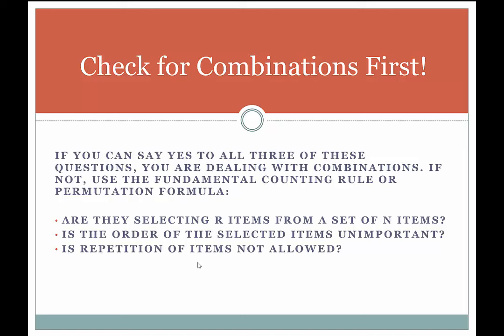Let's go over the three questions you need to ask yourself once you recognize something is a counting problem. The first question is: are they selecting R items from a set of N items? If you can say yes to that, it could be a combination — taking a subset from a set of items meets the criteria for combinations.